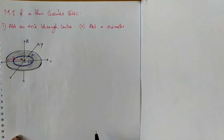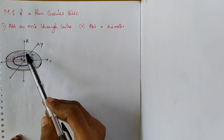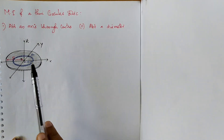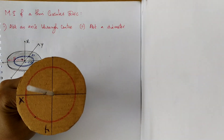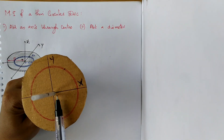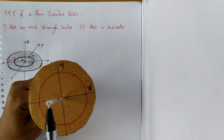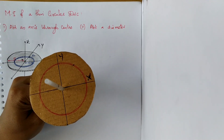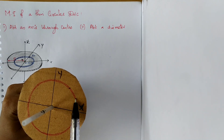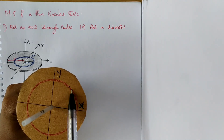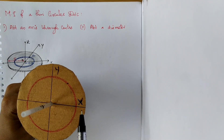We are going to find the moment of inertia of this disc about an axis which passes through the center and perpendicular to the plane of the disc, which is marked as Z here. This is your disc — it has two axes X and Y which lie in the plane, and the third axis Z is perpendicular to the plane. The disc is made up of a large number of concentric rings, drawn in red here, with radius varying from 0 to capital R.